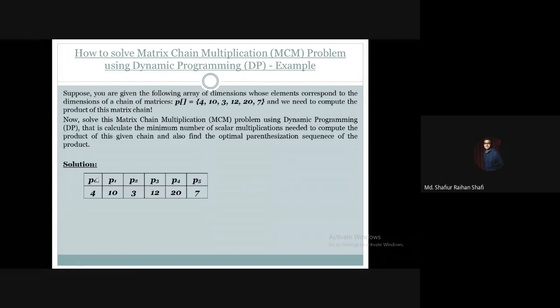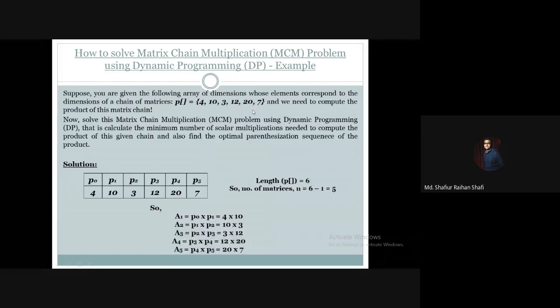We map the array values: 4 is P0, 10 is P1, 3 is P2, 12 is P3, 20 is P4, and 7 is P5. The length of the array is 6, and the total number of matrices is 5.